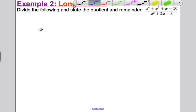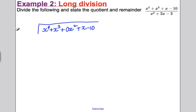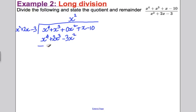Long division — here we go. We are taking x⁴ + x³. Remember, there's no x² here — do not forget that, it'll all go horribly wrong. Plus x minus 10, and we are dividing by x² + 2x − 3. How do I get an x⁴ using the highest power here? I need an x². If I had an x² in the x² column and multiplied out, I would get x⁴ + 2x³ − 3x².